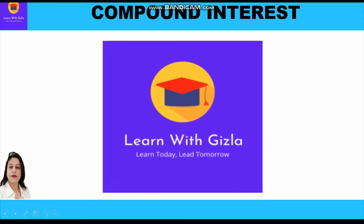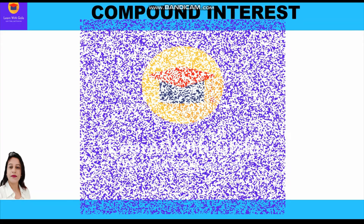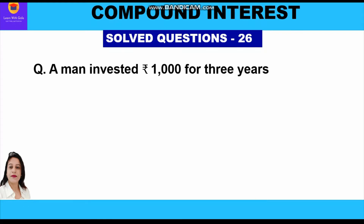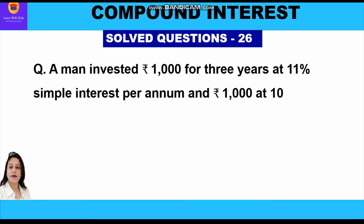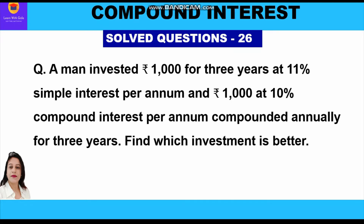Hello dear students, hope you are doing good. Welcome to YouTube channel Learn with Gizla. In this video we shall be taking yet another important question related to compound interest. A man invested rupees 1000 for three years at 11% simple interest per annum, and rupees 1000 at 10% compound interest per annum compounded annually for three years. Find which investment is better.